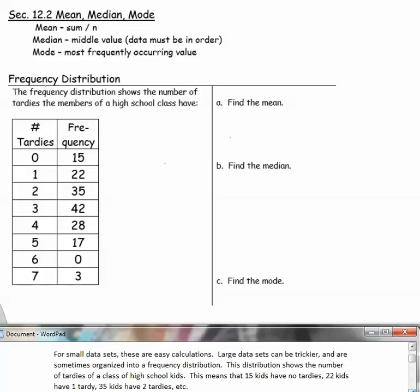For small sets, these are easy calculations. But larger data sets can be trickier and are sometimes organized into a frequency distribution. This distribution shows the number of tardies of a class of high school kids. This means that 15 kids have no tardies, 22 kids have one tardy, 35 kids have two tardies, etc.